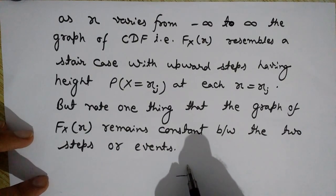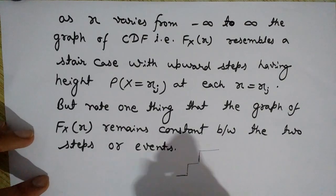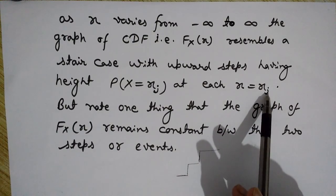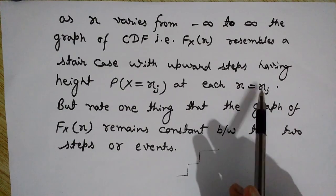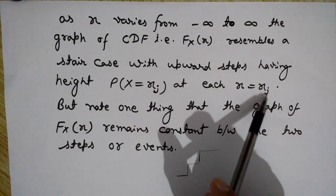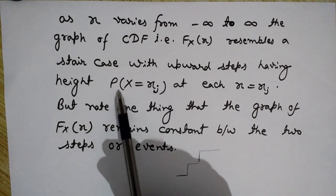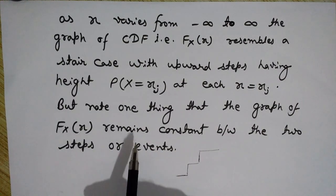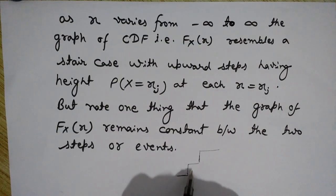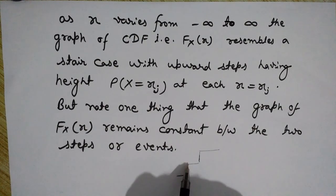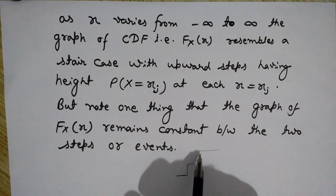From this, you can understand that as x varies from minus infinity to infinity, the graph of the CDF resembles a staircase with upward steps, with each step having a height equal to P(X = xj) at each x = xj. The graph remains constant between the two steps or events, as you can see in the diagram. These heights denote the probability at that value of x.